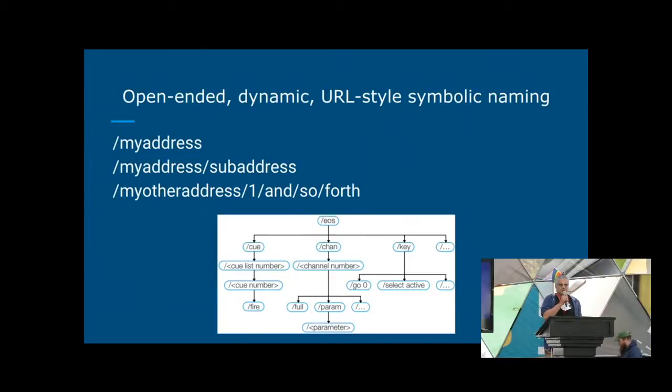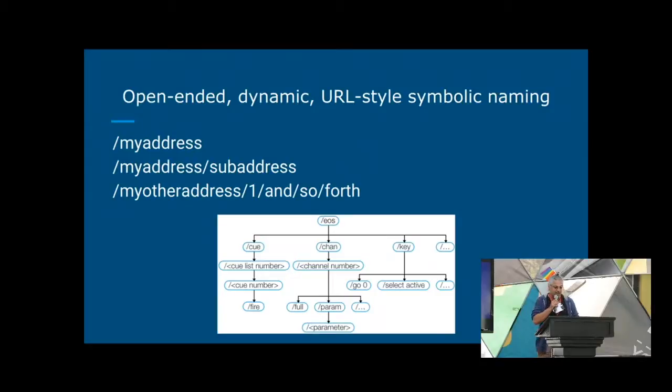Those addresses basically just look like a folder structure, which makes them very easy to have good semantic labeling. You can also make fairly complex trees.